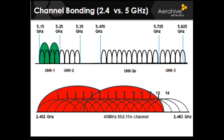Here's an example of channel bonding in 5 GHz versus channel bonding in 2.4 GHz. The top illustration shows bonding channels in the lower UNII band. The bottom example shows bonding in 2.4's ISM band. Notice that if you bond in 2.4, you can really only place one access point there because you're taking up almost all of the 2.4 GHz space, leaving only one single channel remaining.